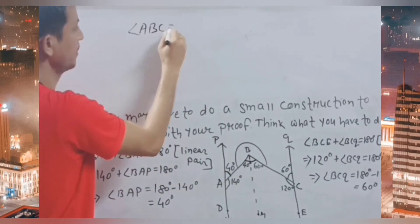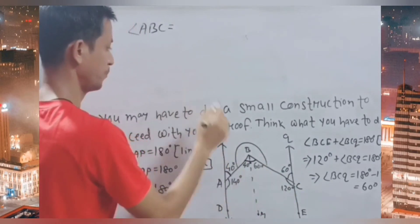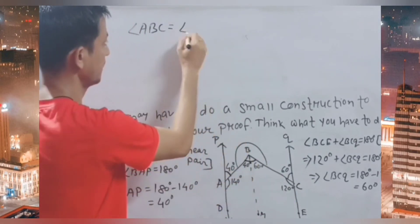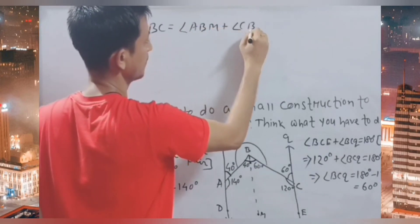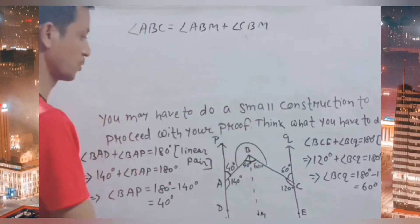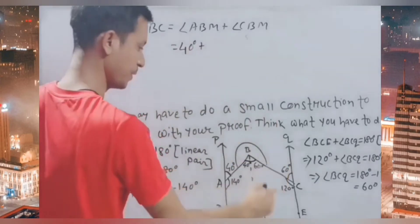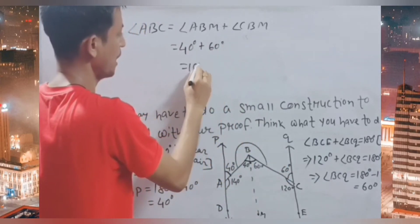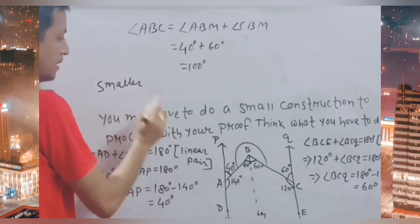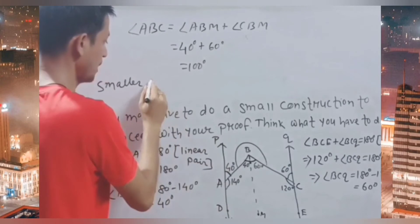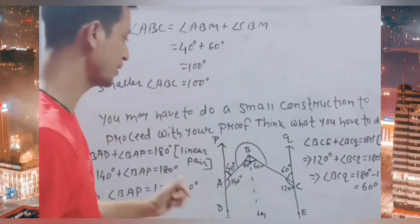So angle ABN is 40 degrees and angle CBN is 60 degrees. Therefore, angle ABC equals angle ABN plus angle CBN, which equals 40 plus 60, equal to 100 degrees. So the smaller angle ABC is 100 degrees.